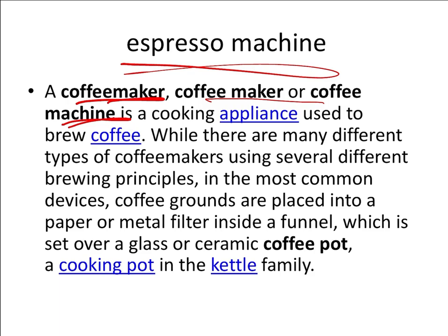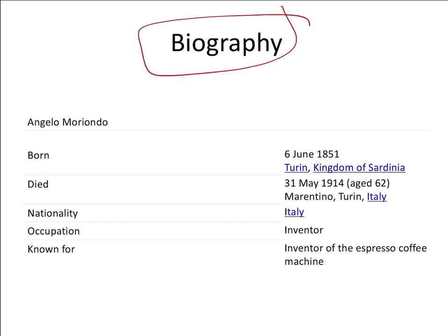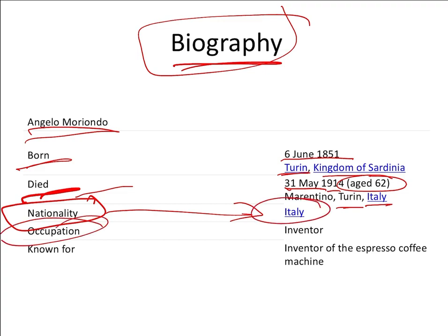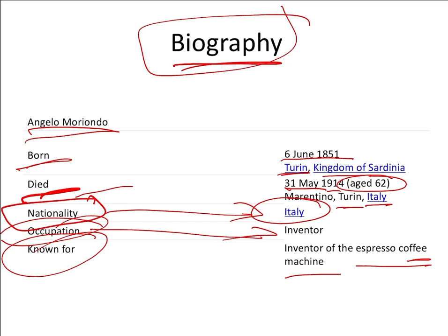Let's look at the biography of Angelo Morendo. He was born on 6 June 1851 and died on 31st May 1914 at the age of 62. He was born in Turin, Kingdom of Sardinia, and died in Turin, Italy. His nationality was Italian, and his occupation was that of an inventor. He is known for his invention of the espresso machine, also called the coffee maker.